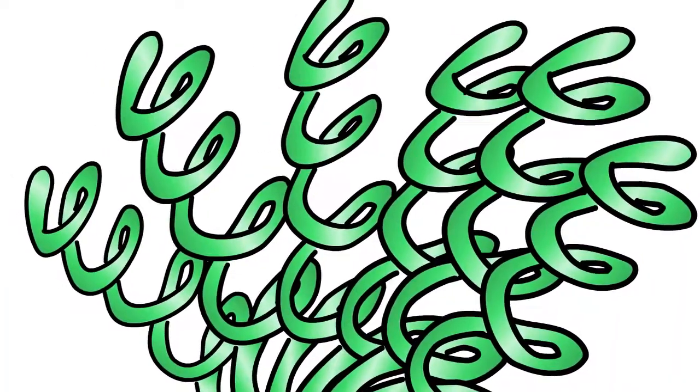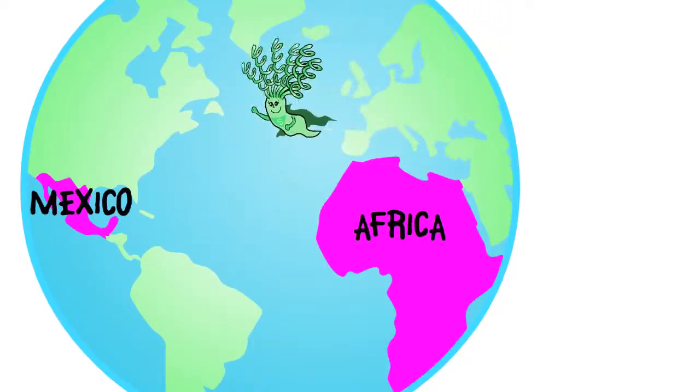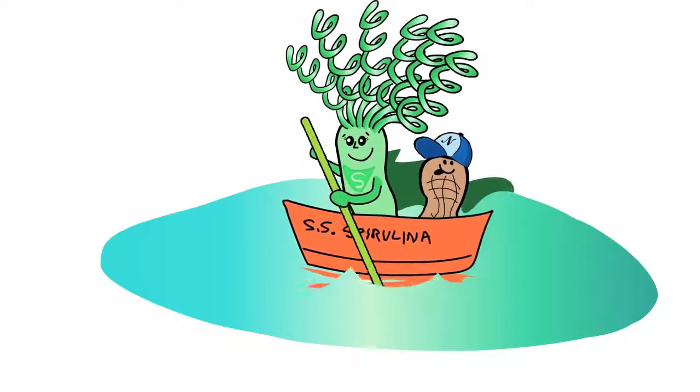Spirulina is a blue-green algae that's originally from saltwater lakes in Mexico and Africa, but today is mostly grown in man-made ponds.